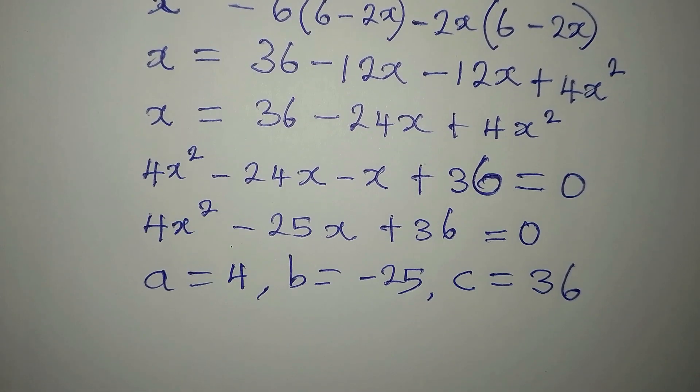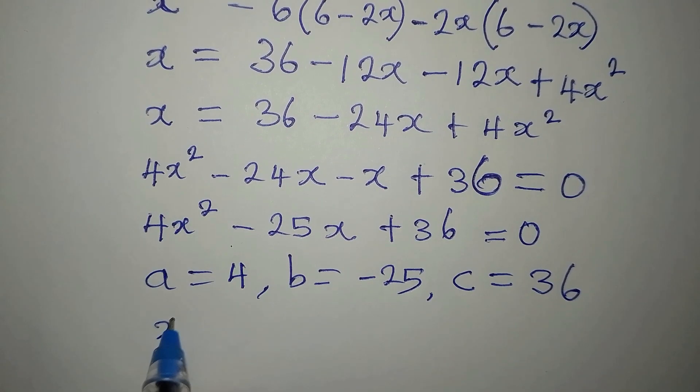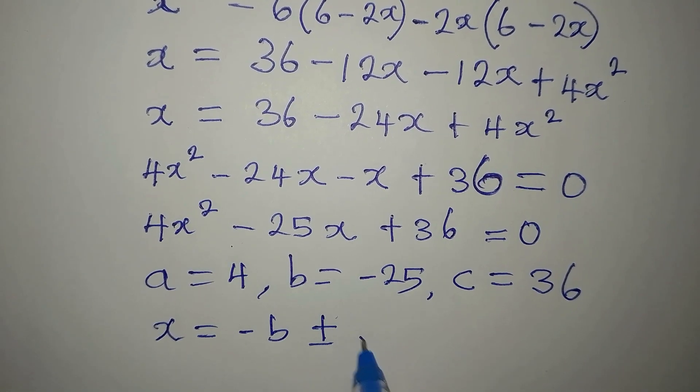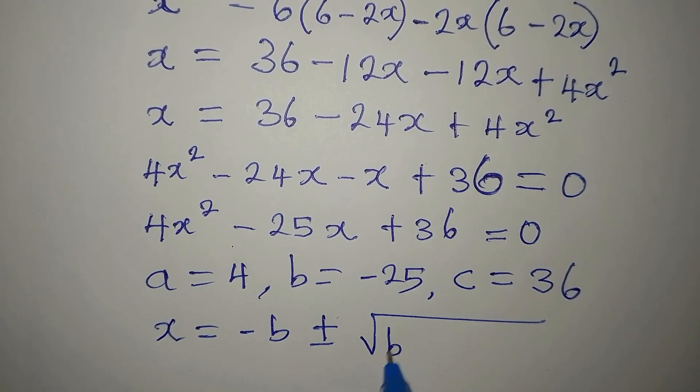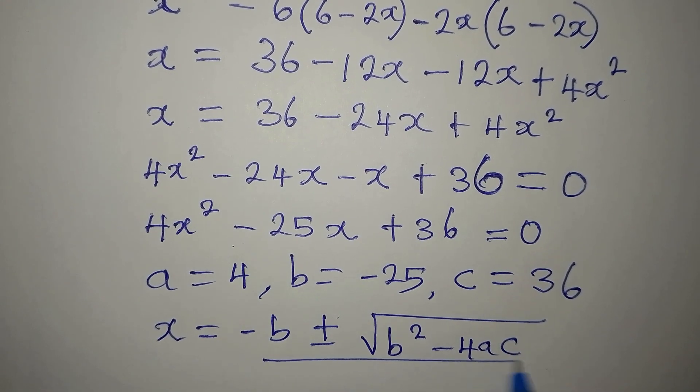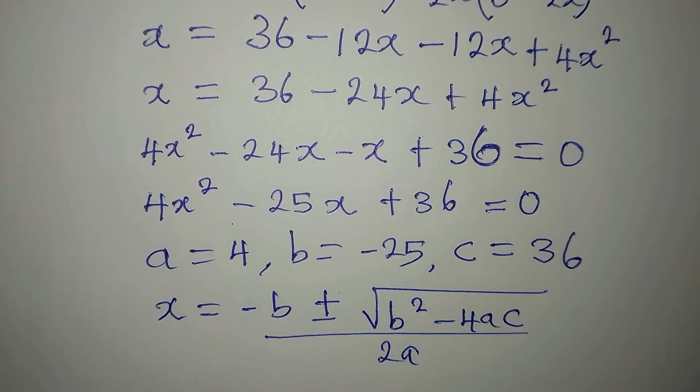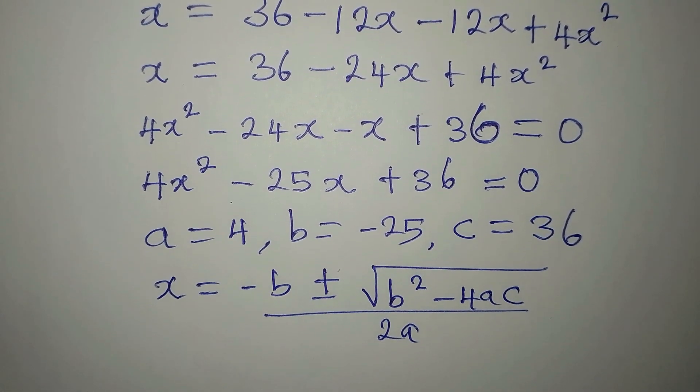And now, what is the formula? The formula is x equals minus B plus or minus square root of B squared minus 4AC. We divide everything by 2A.